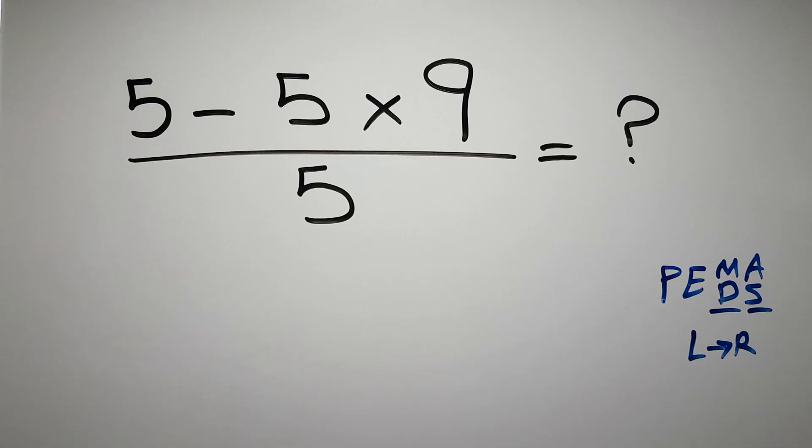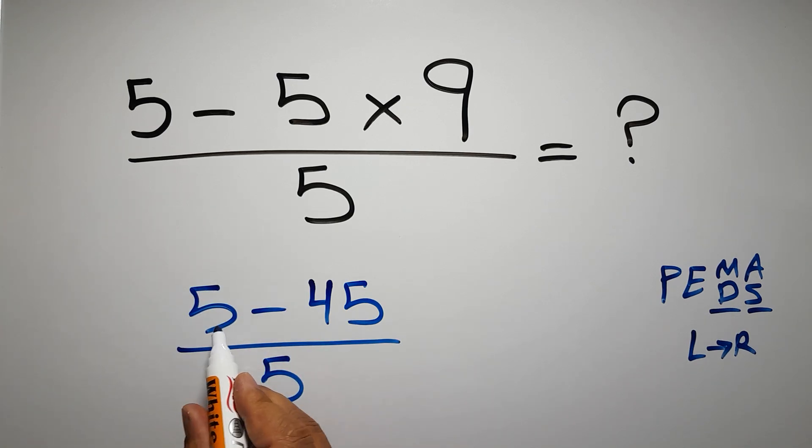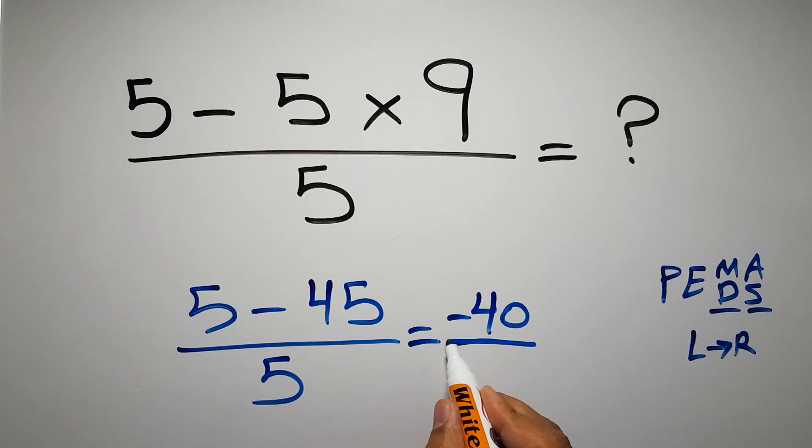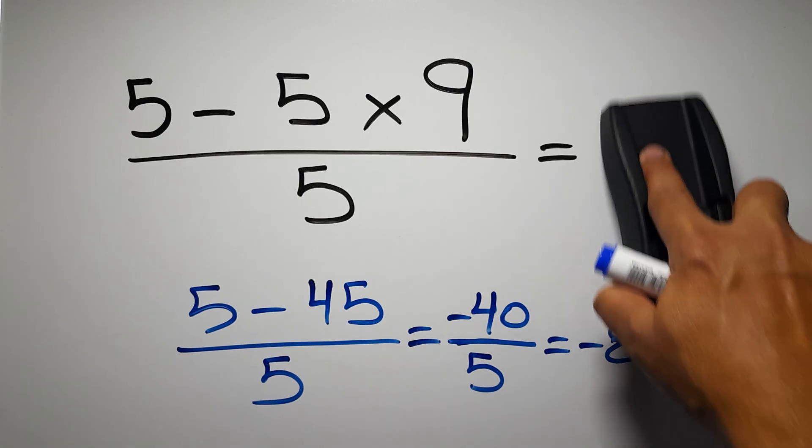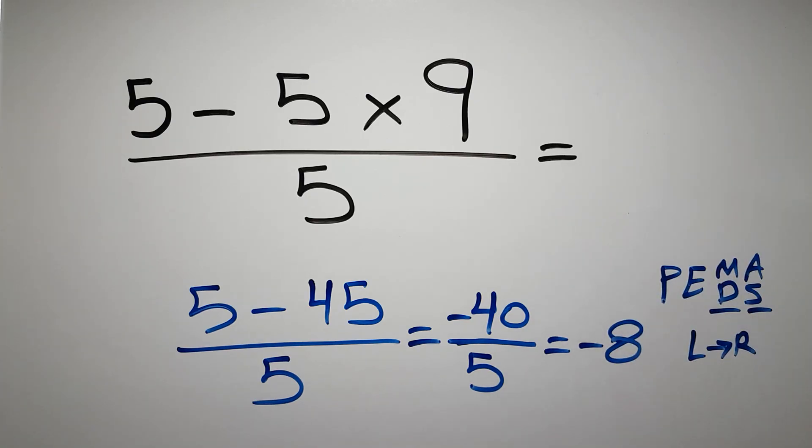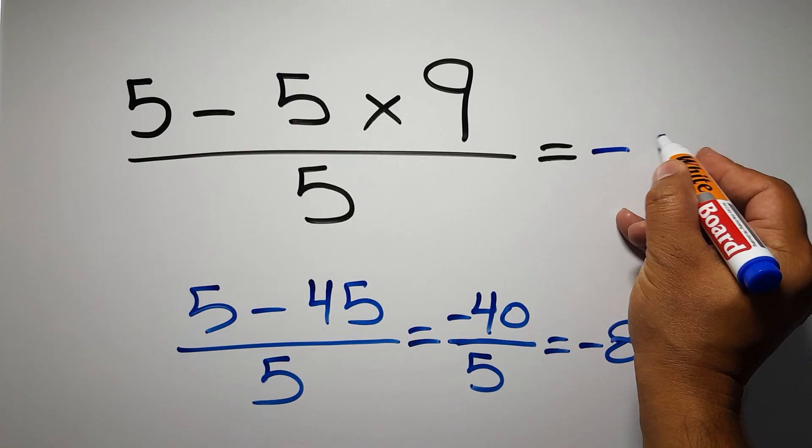So 5 minus 45 over 5... Now 5 minus 45 gives us negative 40, and negative 40 over 5 equals negative 8. And this is our final answer to this problem. The correct answer is negative 8.